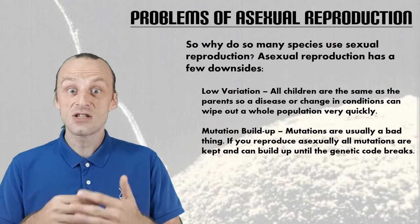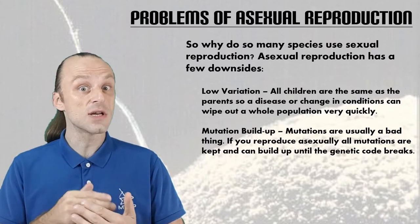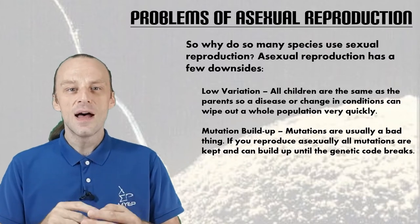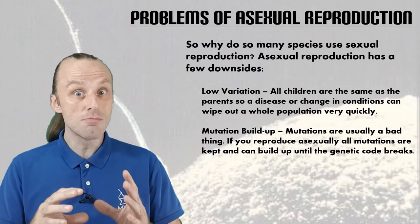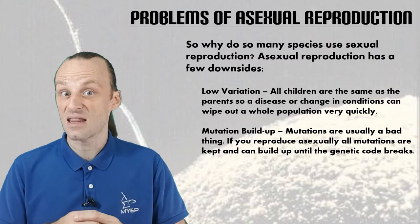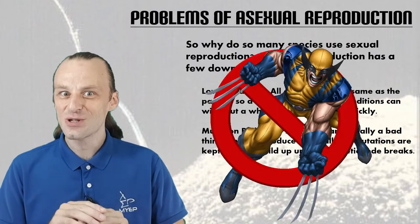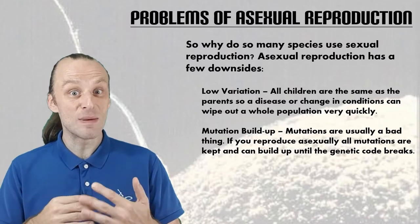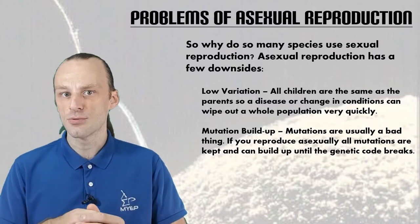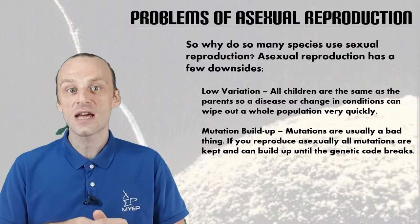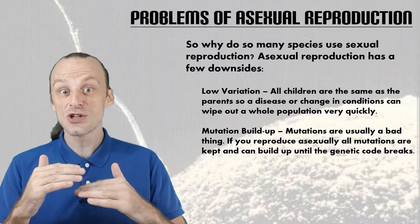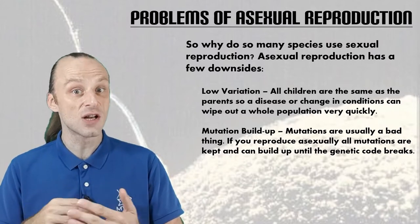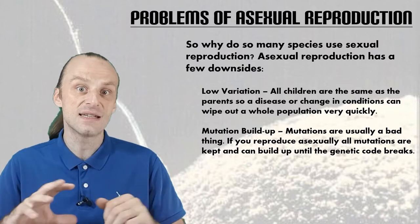The second problem is to do with those mutations which can build up over time. It's important to remember that genetic mutations are almost always a bad thing — they do not give you superpowers. In fact, they lead to your genetic code becoming weaker and harder to read. If you reproduce asexually, these mutations build up over the generations and eventually the genetic code breaks down altogether.